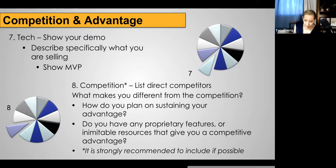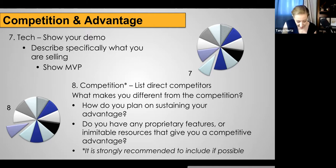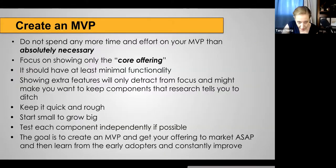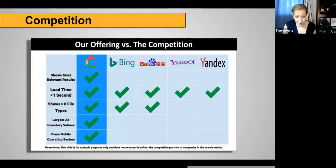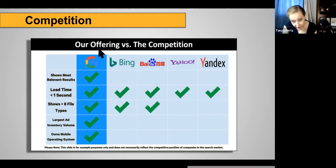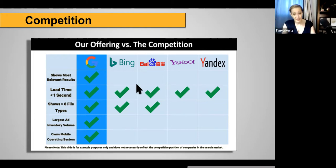List the direct competitors. What makes you different from those competitors? If you have any proprietary features, intellectual property protection, or anything inimitable that others can't copy, put that in. You can probably include a simple comparison slide — like if your company was Google, showing what you have versus what all the other companies have. It's a clear, easy way to say 'look at all the things that we do, and they only do a few of them.'